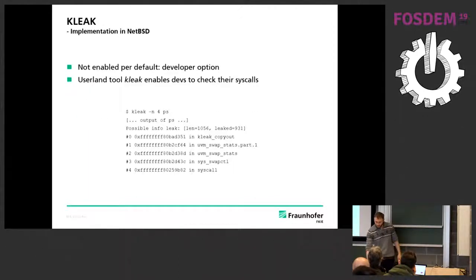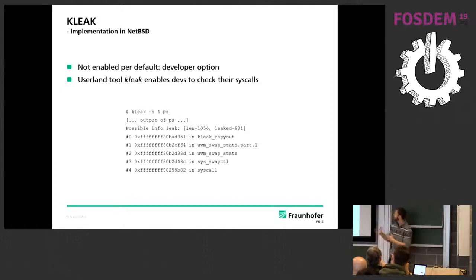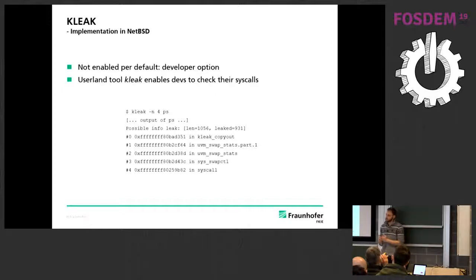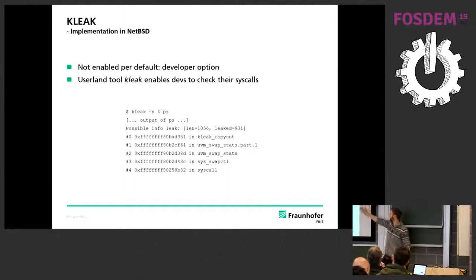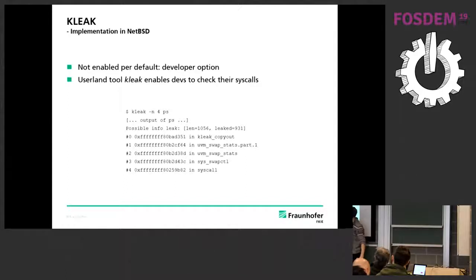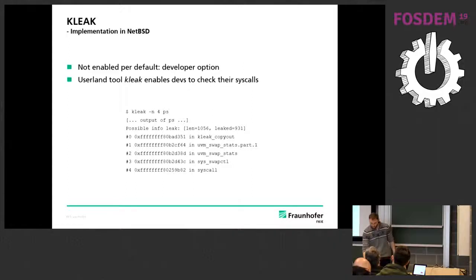This is implemented in NetBSD with a userland k-leak tool that interacts with the kernel part. In general it's not enabled by default — it's a developer option — but the system remains quite usable, so there's not a tremendous slowdown. Here we can see an example where we call k-leak with the number of rounds (in this case 4) and the command ps. What happened was that Maxime found one which was quite tremendous — it leaked 931 bytes of kernel memory. That's the biggest one we found.